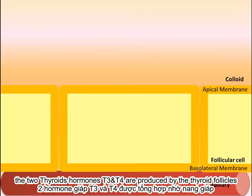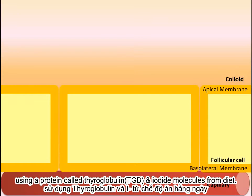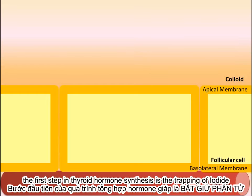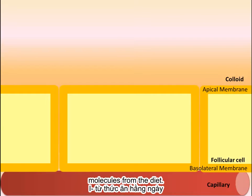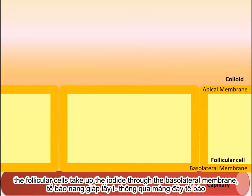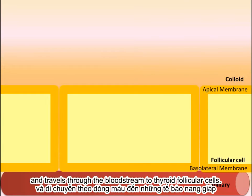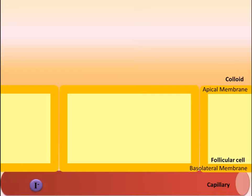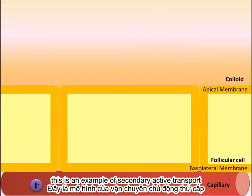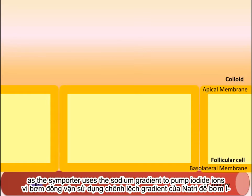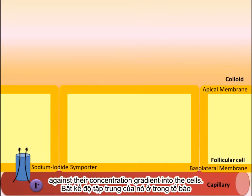T3 and T4 are produced by the thyroid follicles using a protein called thyroglobulin and iodide molecules from the diet. The first step in thyroid hormone synthesis is the trapping of iodide molecules from the diet. Iodide is absorbed from the GI tract and travels through the bloodstream to thyroid follicular cells. The follicular cells take up the iodide through their basolateral membrane using a sodium-iodide symporter. This is an example of secondary active transport, as the symporter uses the sodium gradient to pump iodide ions against their concentration gradient into the cell.